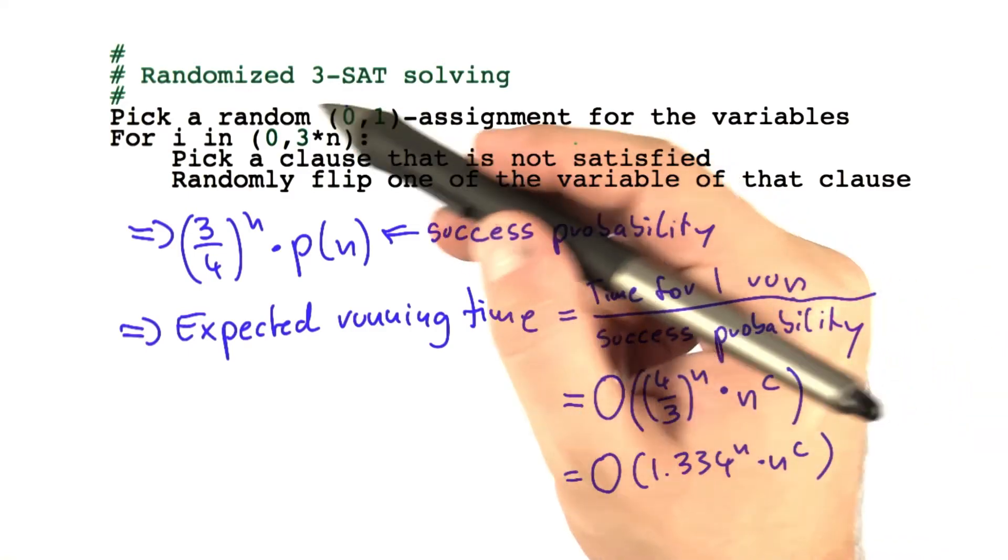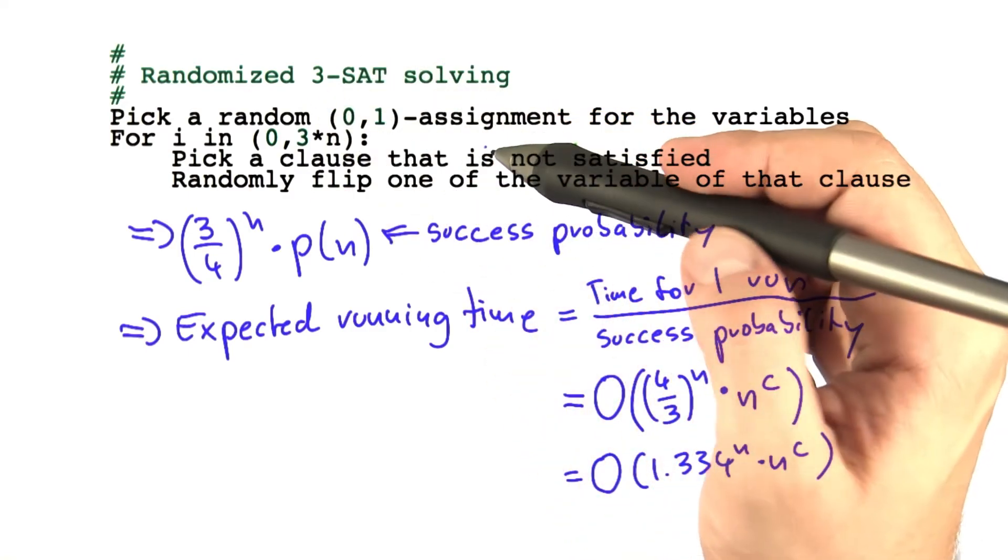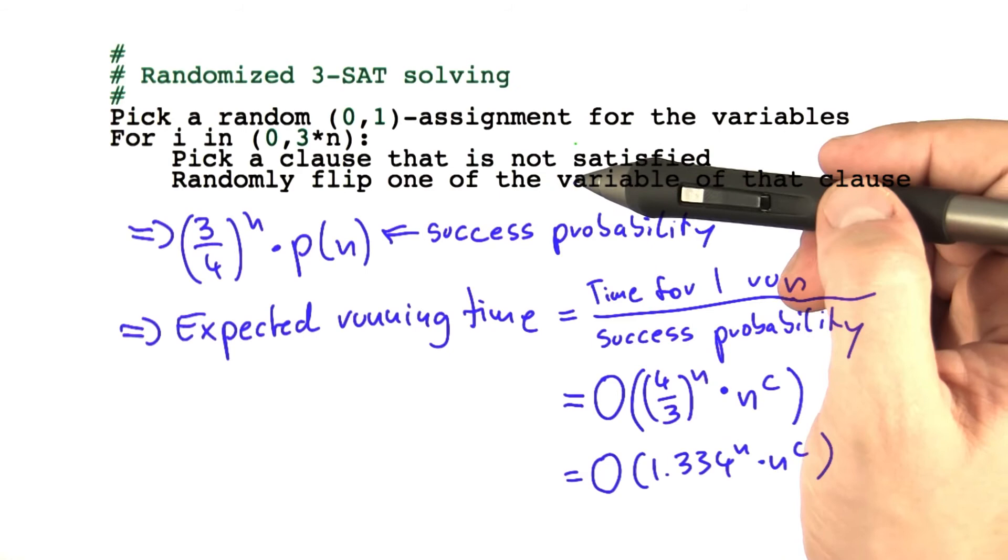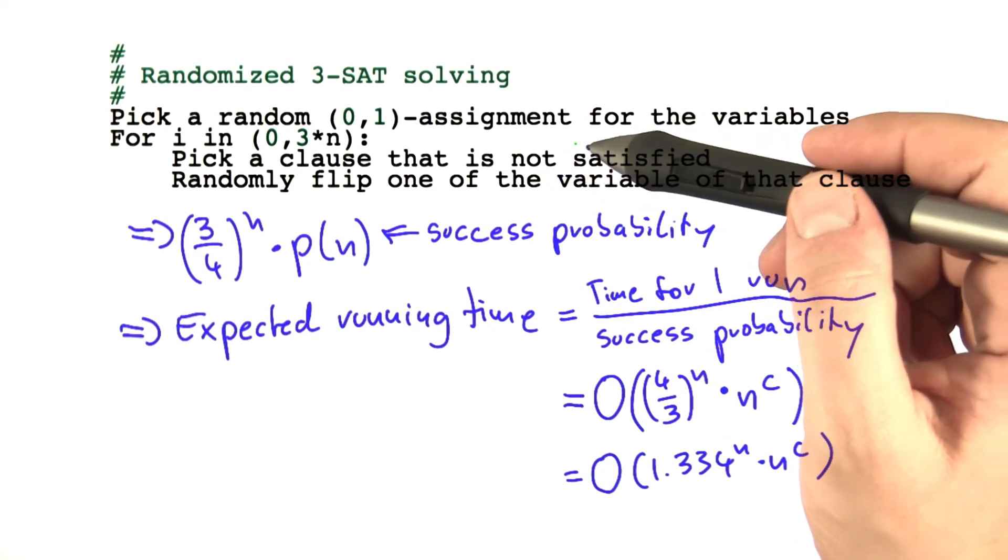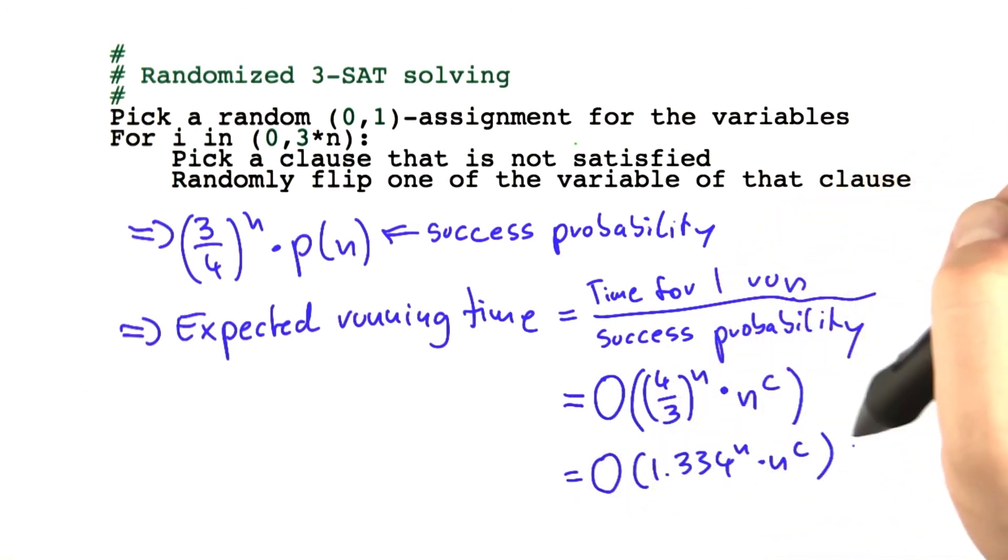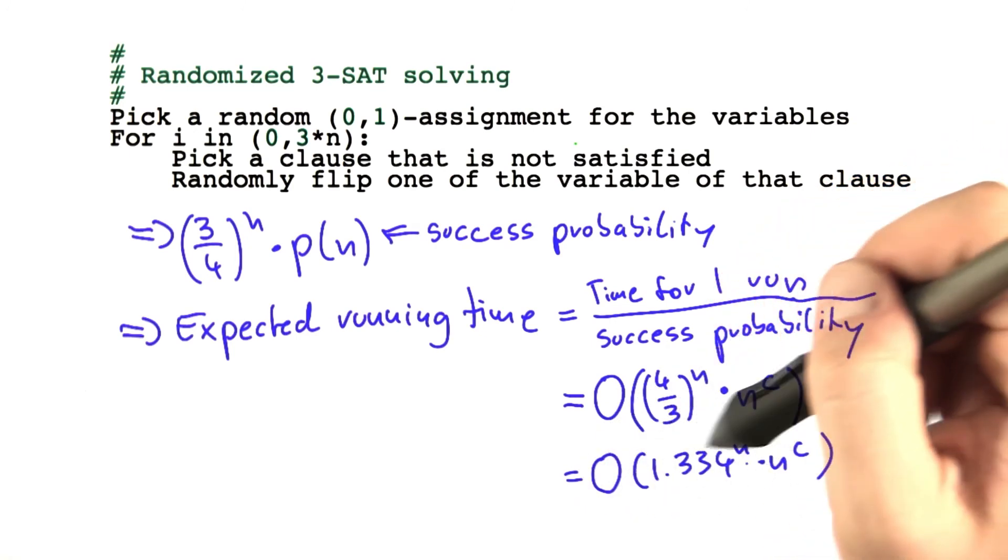well, okay, so we know that 3-SAT is solvable in exponential time. Now we introduce randomness, which means we're not even sure that we're finding the satisfying assignment, at least not totally sure, and we're still ending up with exponential running time. So what's the deal here?